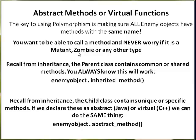Abstract methods are virtual functions. The key to using polymorphism is making sure all enemy objects have methods with the same name. You want to be able to call a method and never worry if it is a mutant, zombie, or any other type. All characters extend class enemy, so you know they will all have that same set of inherited methods.